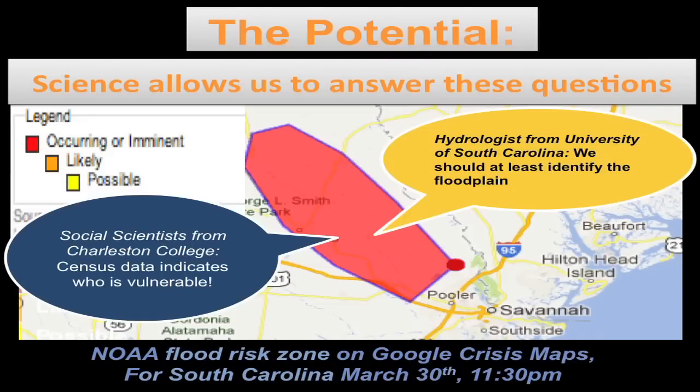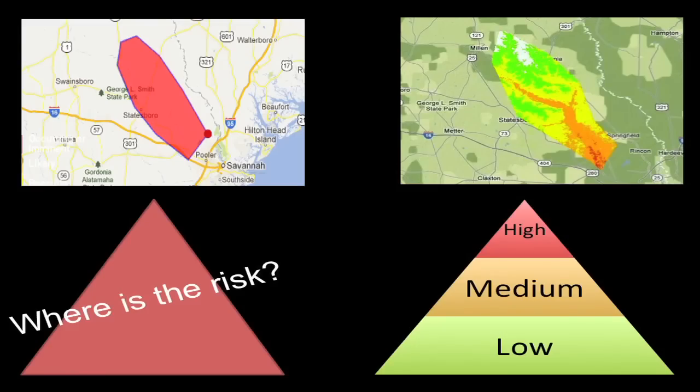But science allows us to answer these questions already. Hydrologists can identify the flood plain, and social scientists using census data can predict who is vulnerable and where. So we can go from this red amorphous blob of risk to a refined, qualified risk surface, taking the best from the rigors of hydrological and social science, really honing in on where we should spend our time, energy, and resources.